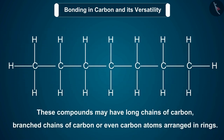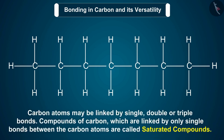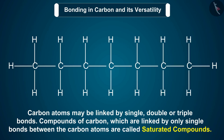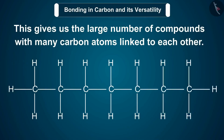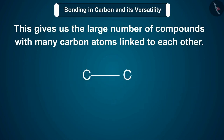These compounds may have long chains of carbon, branched chains of carbon, or even carbon atoms arranged in rings. Carbon atoms may be linked by single, double, or triple bonds. Compounds of carbon linked by only single bonds between the carbon atoms are called saturated compounds. Compounds of carbon having double or triple bonds between their carbon atoms are called unsaturated compounds. This gives us the large number of compounds with many carbon atoms linked to each other.